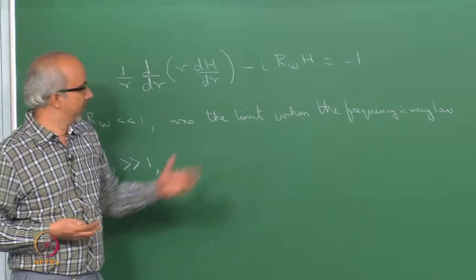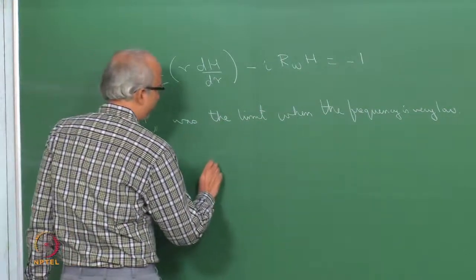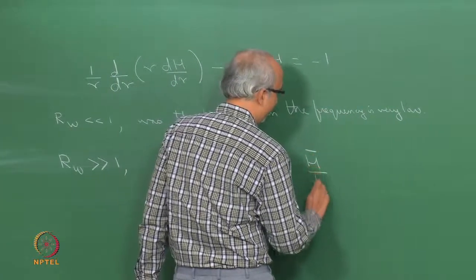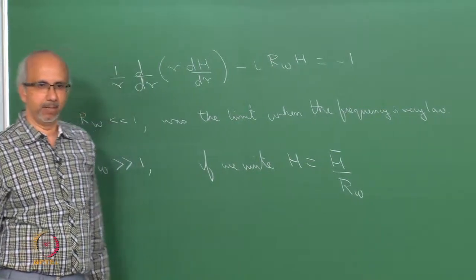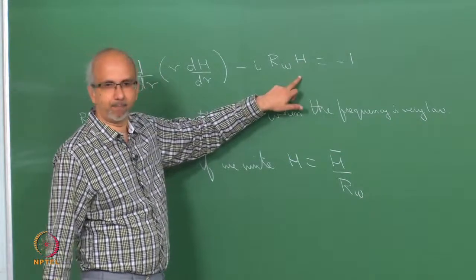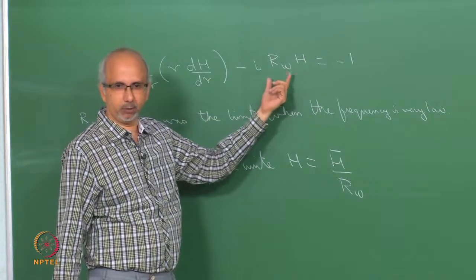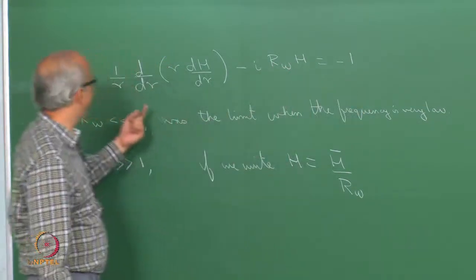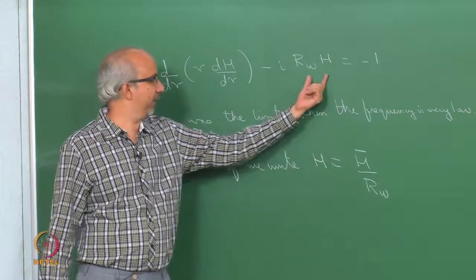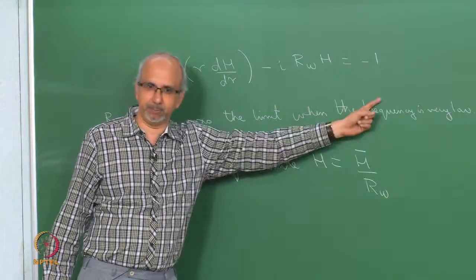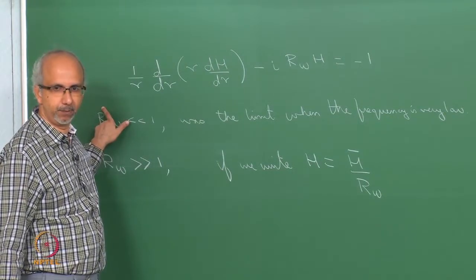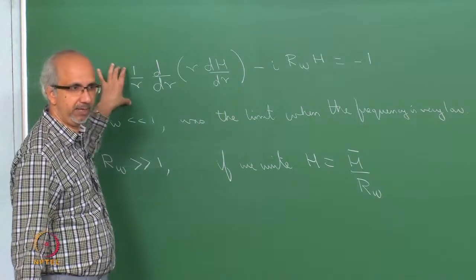How can we possibly get a balance between the inertial and pressure terms? One way is to write H as H̄ divided by Rω. That is, as Rω increases, H becomes small — H̄ divided by Rω — and this would have a magnitude comparable with the pressure term. As I increase Rω, H decreases inversely, so the inertial term will be comparable with the pressure term. When I substitute this, I get H̄ divided by Rω — a factor of 1/Rω — which makes the viscous term negligible.